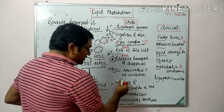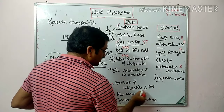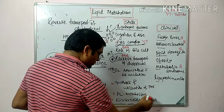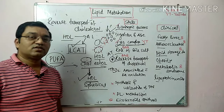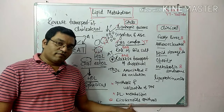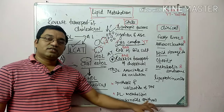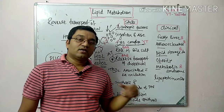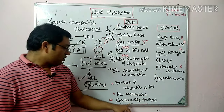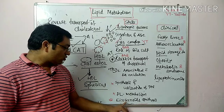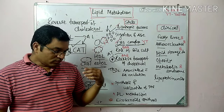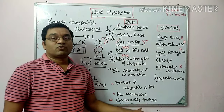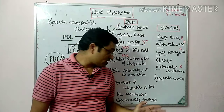Propionyl CoA is converted into methylmalonyl-CoA, which is converted into succinyl coenzyme A and enters the TCA cycle. These are the rare questions: synthesis and utilization of TAG (triacylglycerol), phospholipid metabolism, and eicosanoid synthesis, which means prostaglandin synthesis. There is a YouTube video available on eicosanoid synthesis, covering the role of NSAIDs and inhibitors of prostaglandin synthesis and their therapeutic uses, including in bronchial asthma.